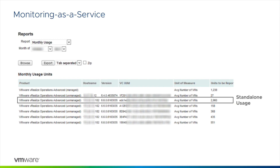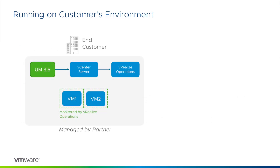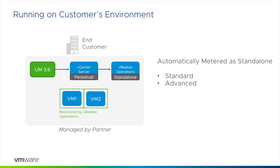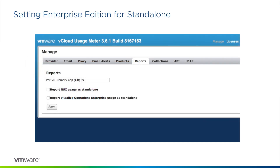Make sure to report this usage as standalone vRealize Operations in the business portal. Another option is to deploy the vRealize Operations appliance within the customer's environment. If you choose this route, make sure to also run a Usage Meter appliance in the customer's environment and designate the vSphere host keys as perpetual. If you're using vRealize Operations Advanced or Standard license keys, the usage will automatically be reported as standalone. But if you want to use vRealize Operations Enterprise, make sure to go to the Manage page on the Reports tab and select 'Report vRealize Operations Enterprise usage as standalone.'